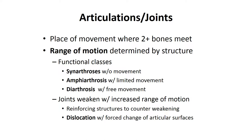The anatomical structure of a joint determines the type and amount of movement that may occur. There are functional classifications of joints based on the range of motion allowed. Synarthrotic joints allow no movement; at a synarthrotic joint the bony edges are quite close together and may even interlock. These extremely strong joints are located where movement between bones must be prevented. Amphiarthrotic joints allow only slight movement and are much stronger than a freely movable joint. A diarthrotic joint is a freely movable joint providing a wide range of motion, typical in the joints of our appendages.